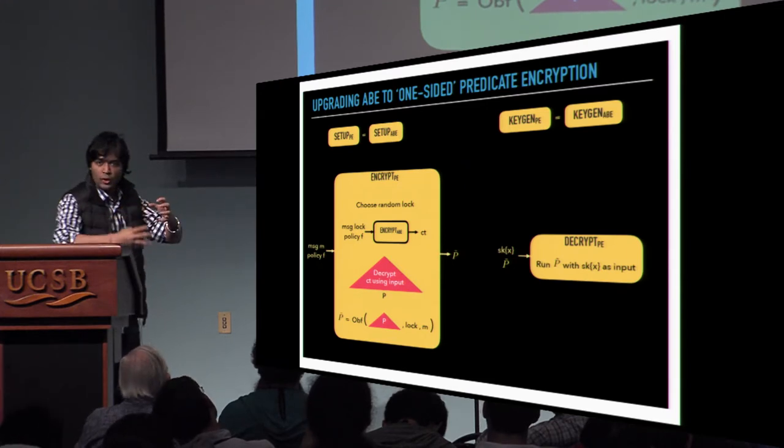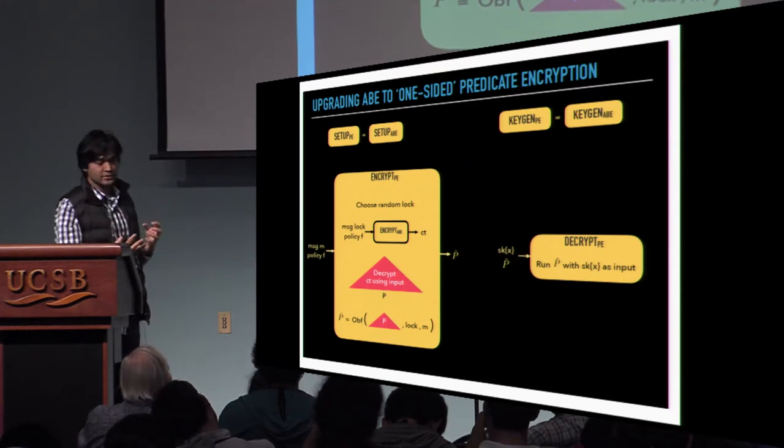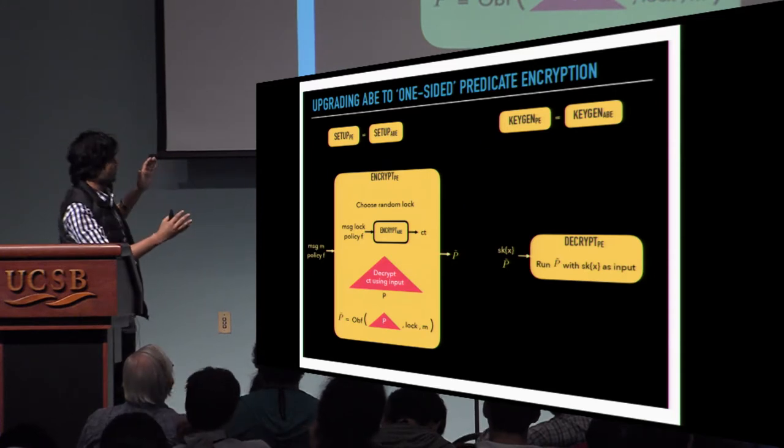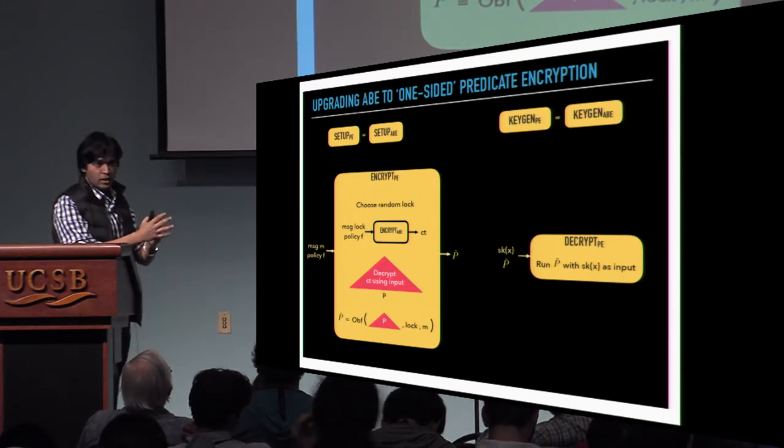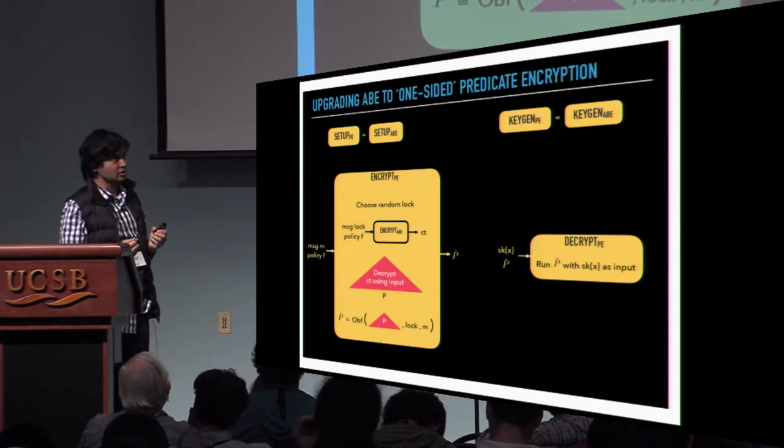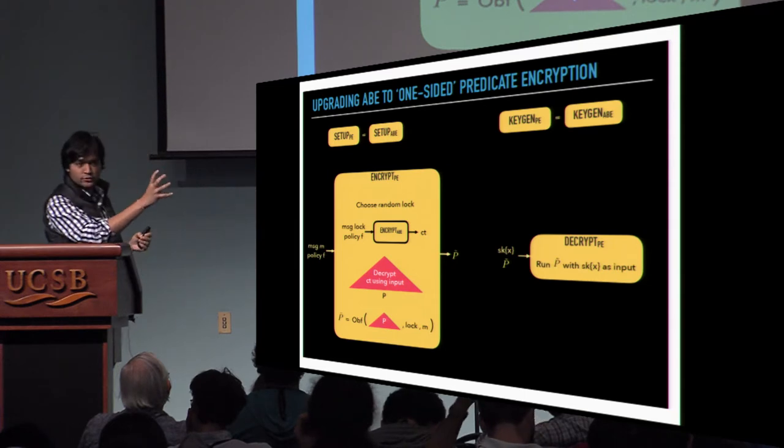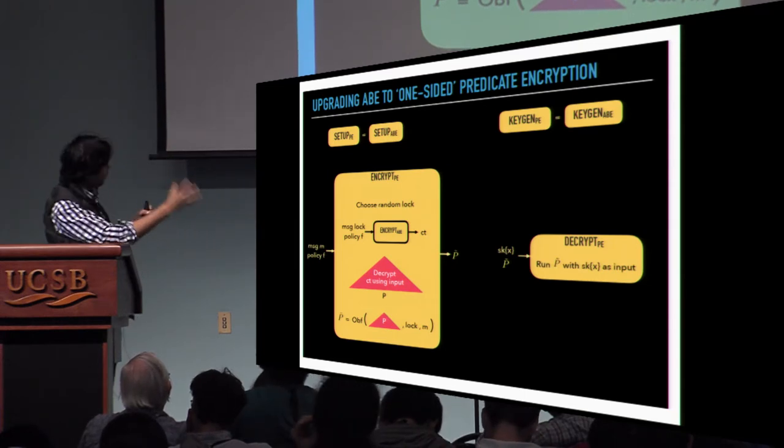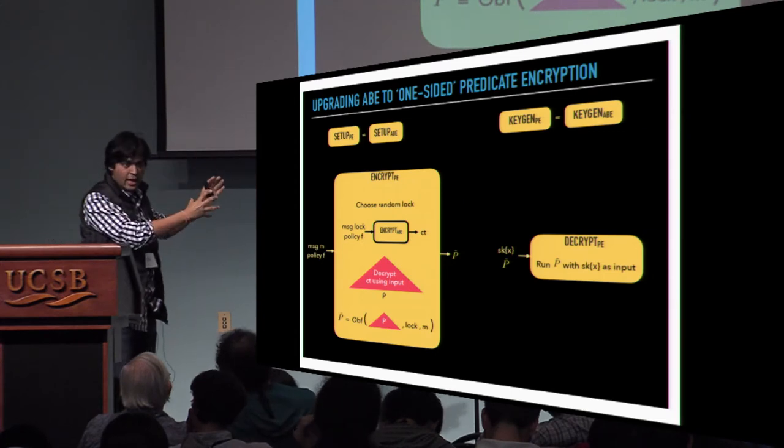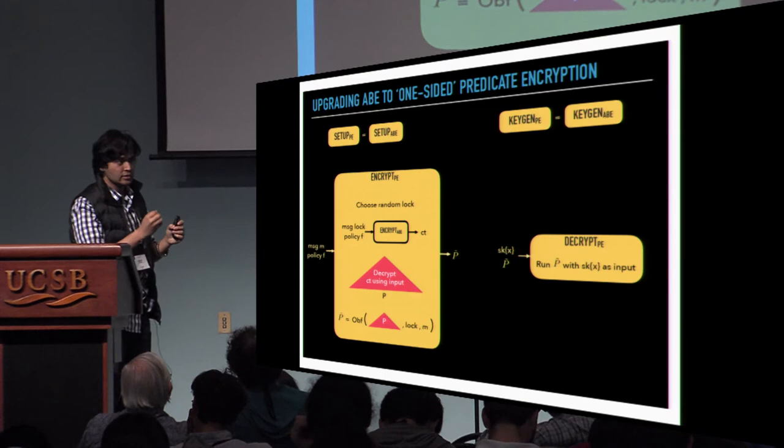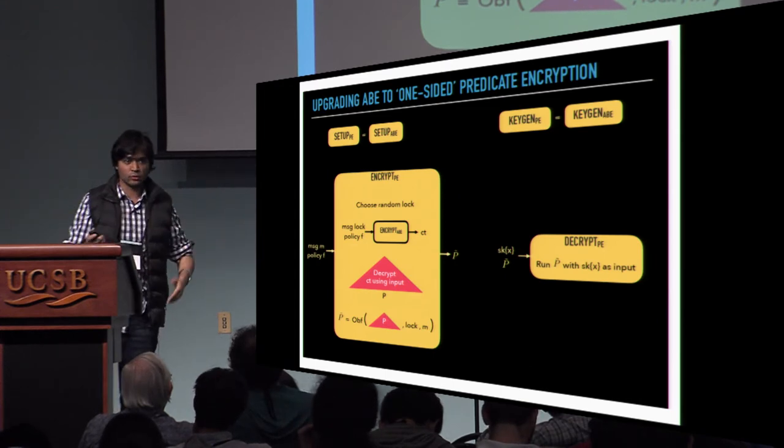In predicate encryption, we also want to hide the attributes inside the ciphertext. The idea is that the setup and the key generation algorithm will work as before. Only in encryption algorithm, we first use a random lock, we encrypt it using the same underlying attribute-based encryption scheme. Now we encode this, we hide the ciphertext that encrypts a random lock inside a program, and we obfuscate it using the lockable obfuscation. And the message that is inside this obfuscated code is the message that we want to encrypt. And to decrypt, we just simply use the secret key.